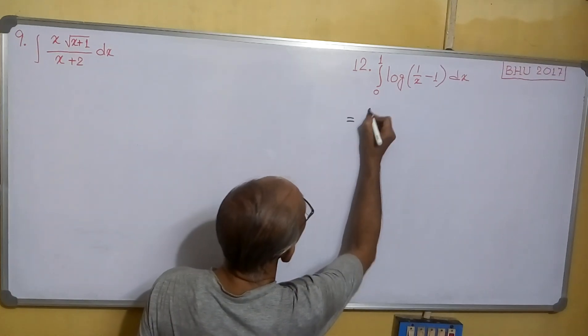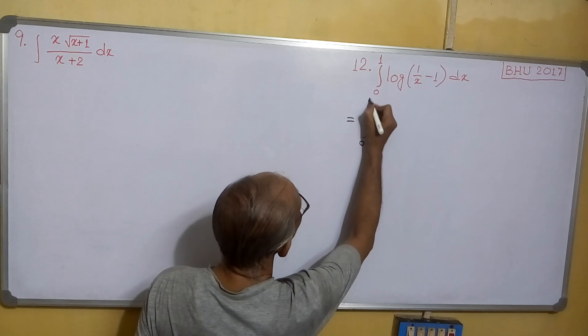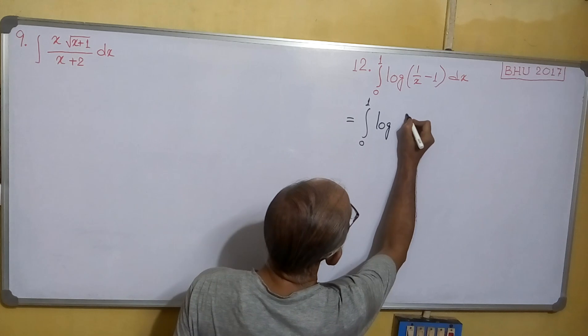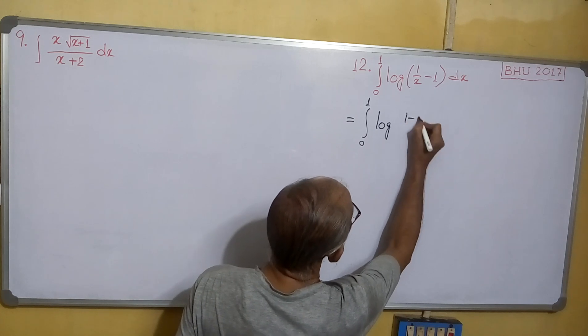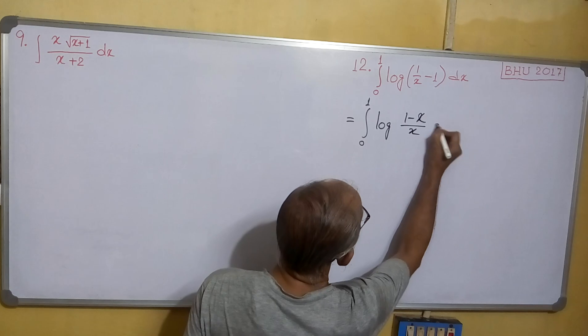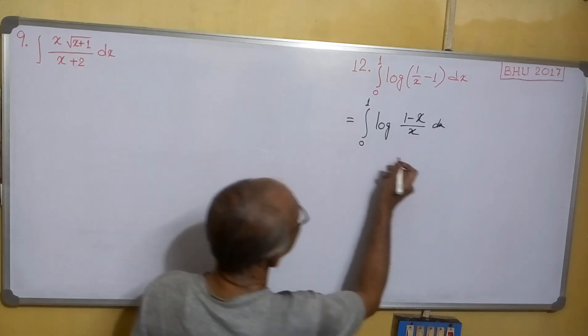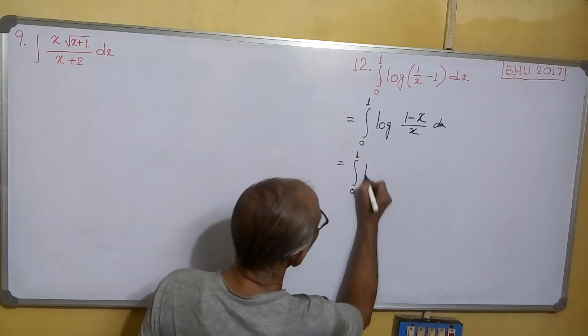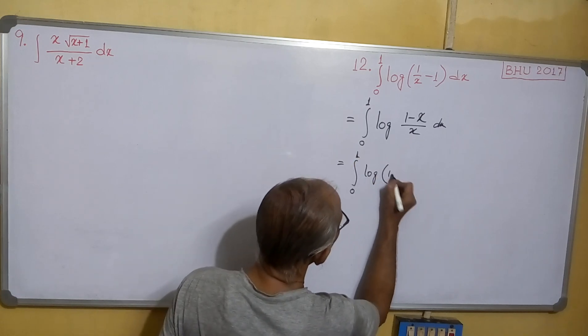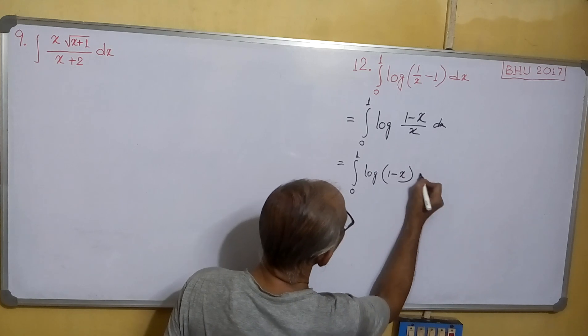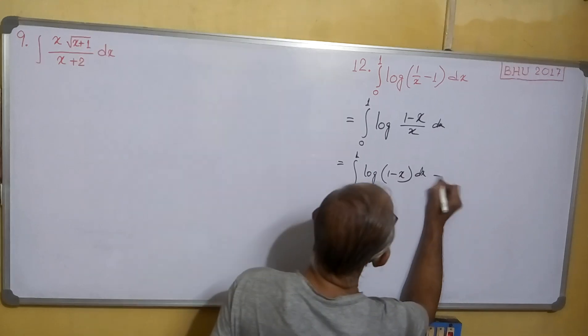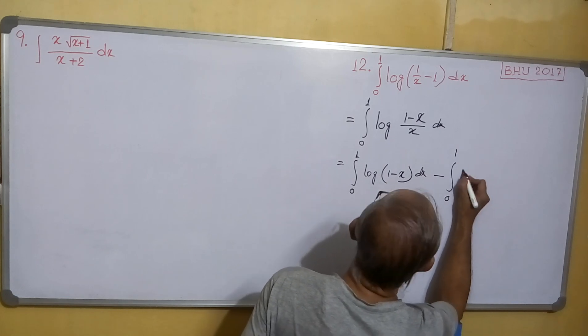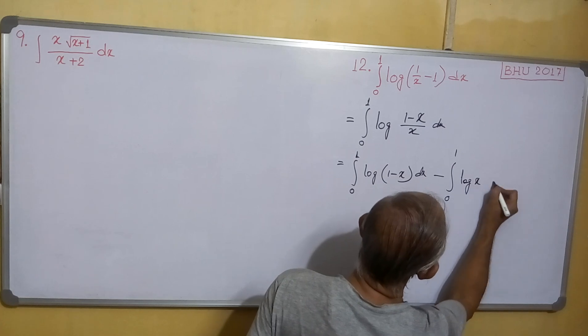This one equals, we can write 0 to 1. If we're doing log, then log of (1-x)/x dx. This can be written as integral 0 to 1 log(1-x) dx minus integral 0 to 1 log(x) dx.